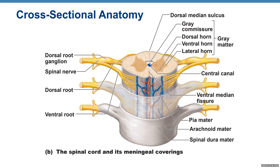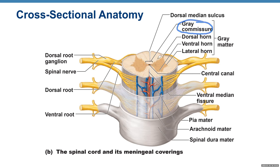Looking at this cross-section, in the middle is the central canal with cerebrospinal fluid. Anteriorly you have the ventral median fissure, and on the back the dorsal median sulcus — sulcus is smaller than fissure. That's the gray matter, shaped like a butterfly, with white matter surrounding it. What connects the gray matter together is called the gray commissure. Gray matter has a dorsal horn, a ventral horn, and in the thoracic area you also have a lateral horn. So we have dorsal root and ventral root of the spinal nerve, and gray matter has horns: dorsal horn, ventral horn, and lateral horn.